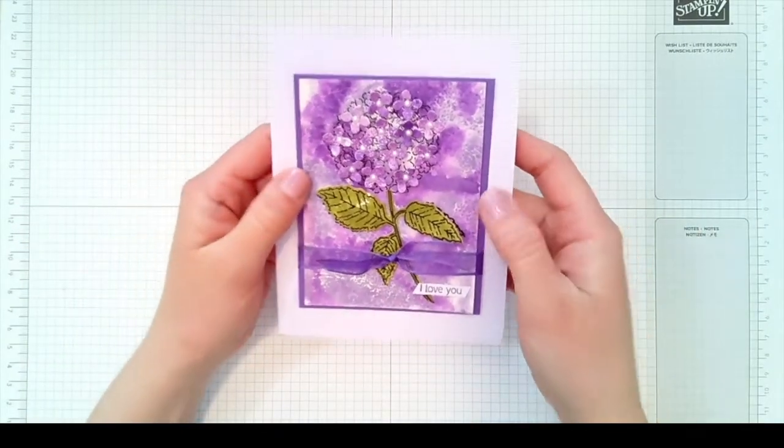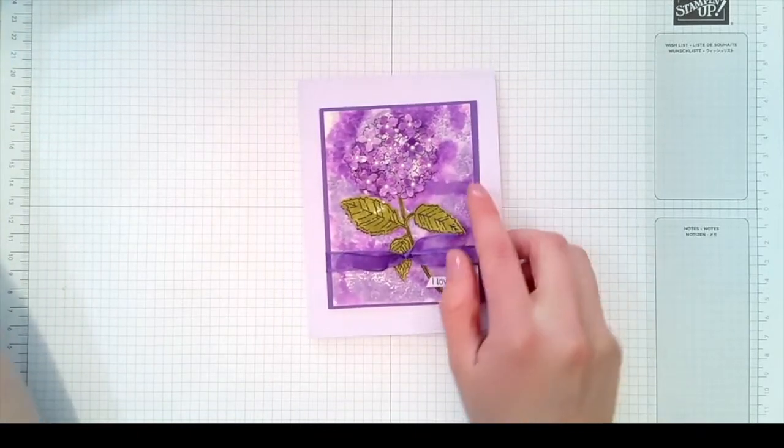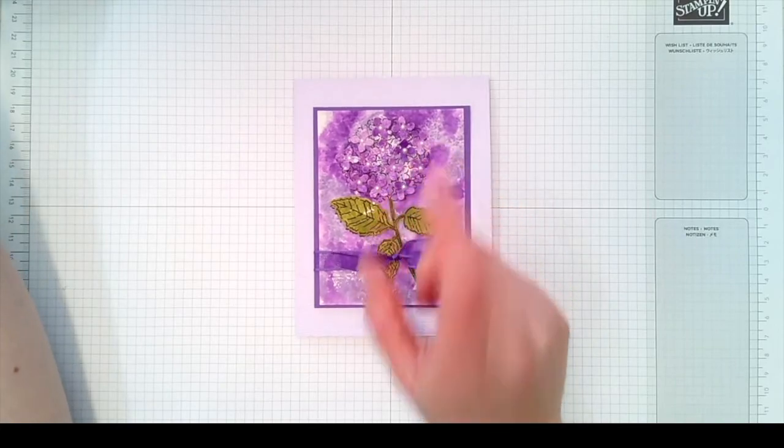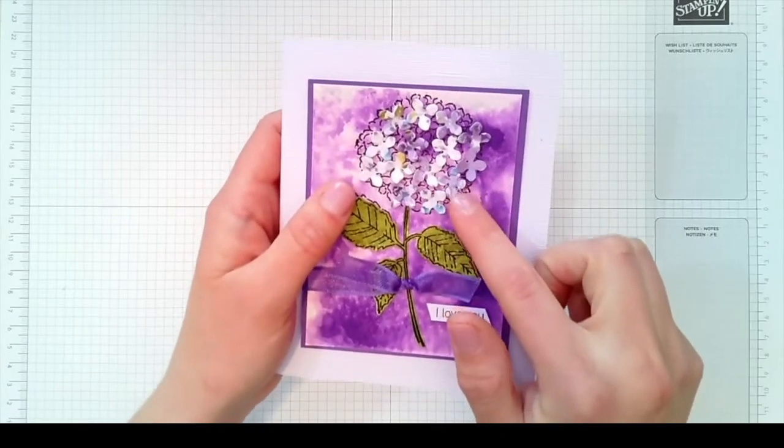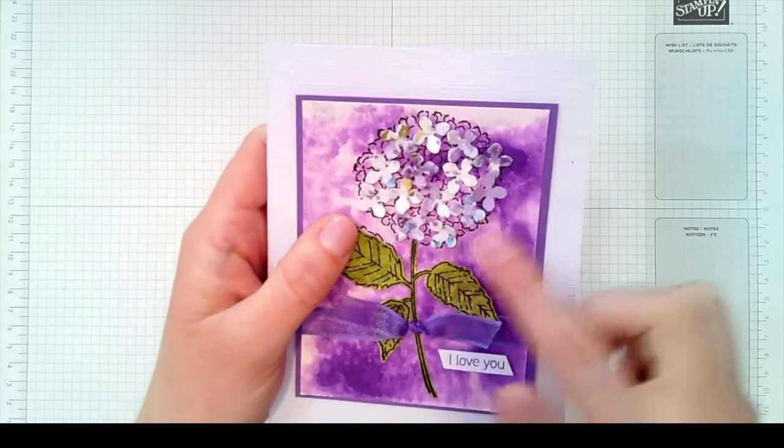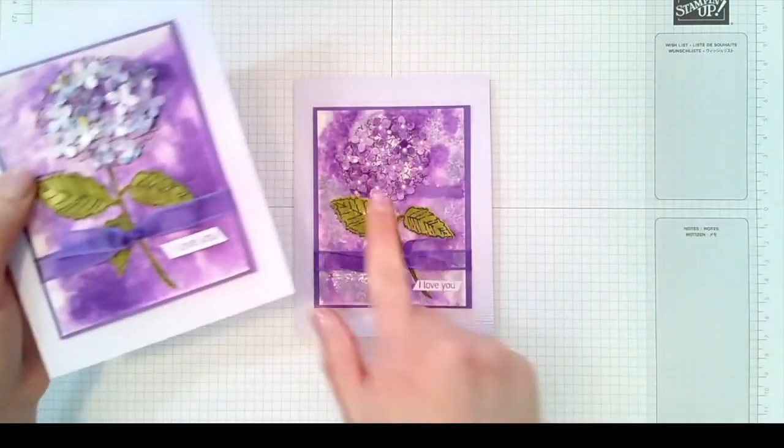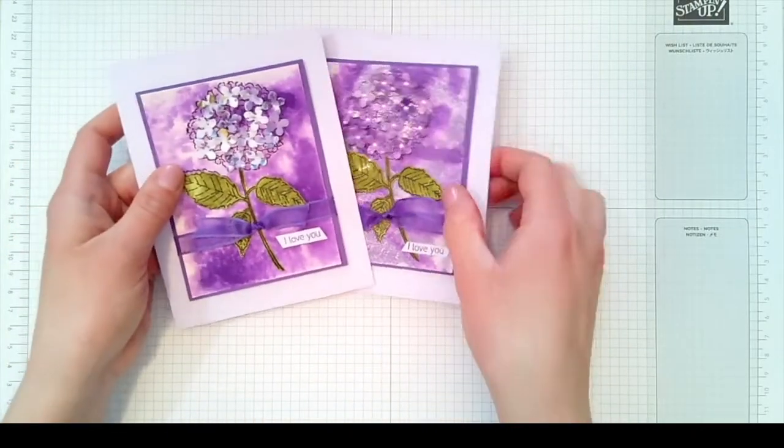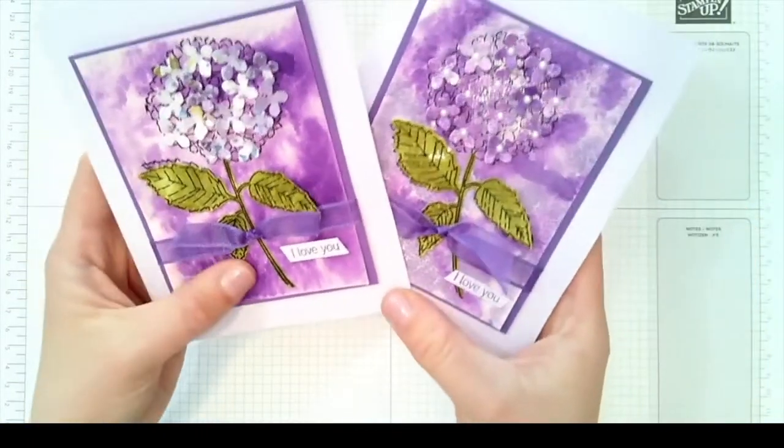One minor change I made on another card: if you do not want to do the smooch technique and add all these little tiny pearls, I used some of the hydrangea hill DSP and just die cut a bunch of these little tiny flowers out of the DSP. That also made a really cute addition that you can adapt if you don't want to add all the little pearls there. You can choose which style you want to make or copy.